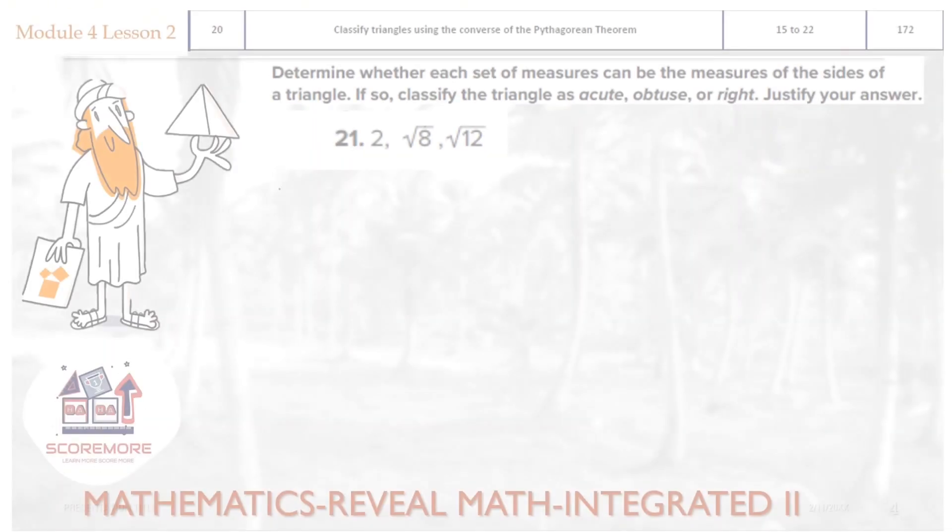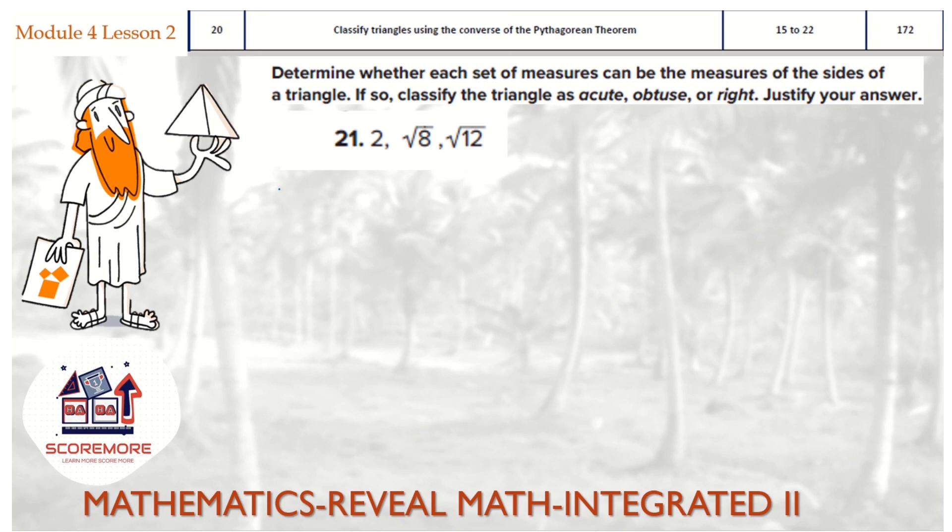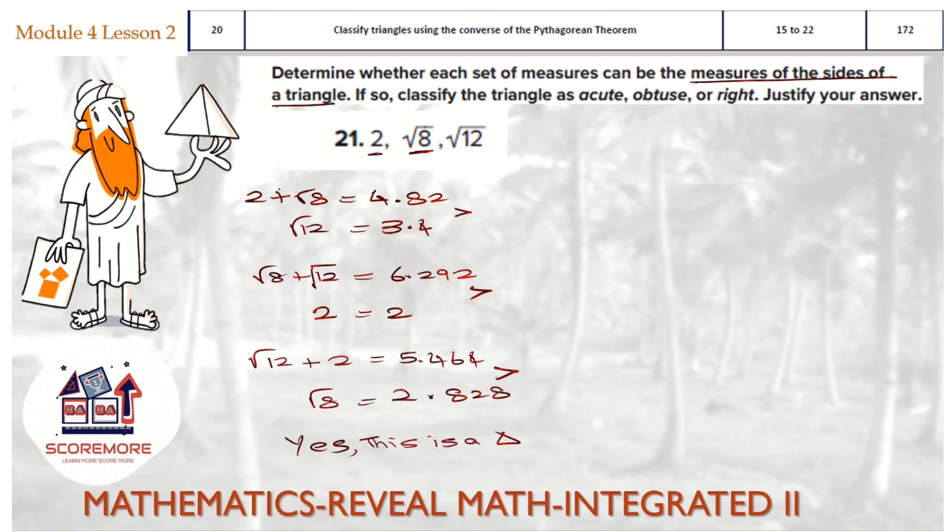Let's move on to question number 21. The same step we are going to follow. And here, the first thing we need to check whether this is a triangle. Choose any two sides. Compare with the other side. Add them. But remember, to find whether this is a triangle or no, we just add them. We don't square them. But to find whether this is acute, obtuse or right, we square them and add them.